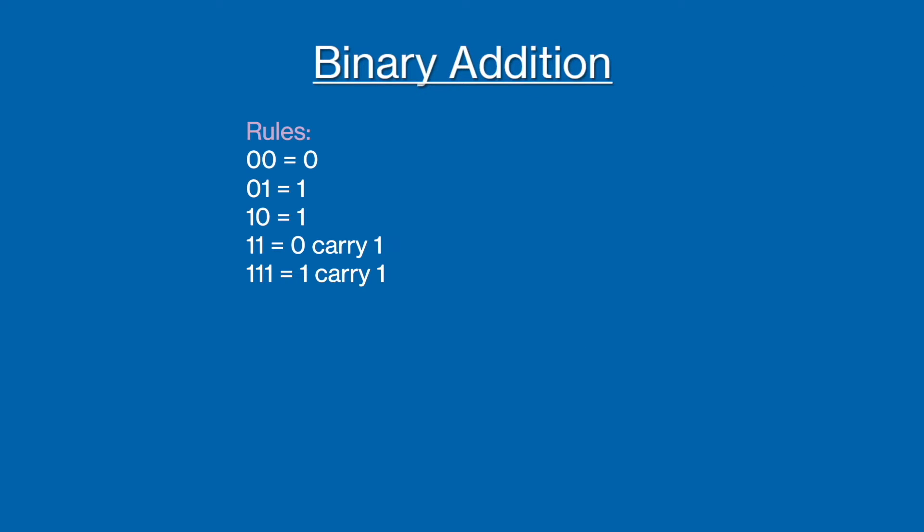To add binary values, you need to use these rules. If you are adding two zeros, the result is a zero. A zero and a one gives a one. Two ones and you get zero carry one. And finally, three ones results in one carry one. These rules will make more sense when we try the following example.